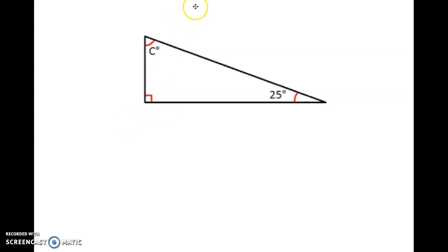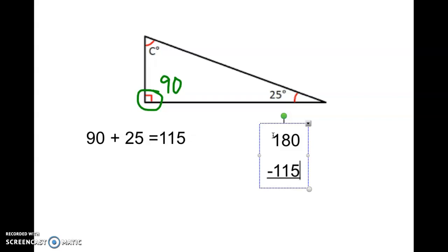For this one, we need to find angle C. Again, knowing that is a symbol for 90 degrees, we start with 90 plus 25 and we get 115 degrees. So then we solve 180 minus 115. To do that again we need to borrow and we get 10 minus 5 is 5, 7 minus 1 is 6, so C equals a very poorly drawn 65.